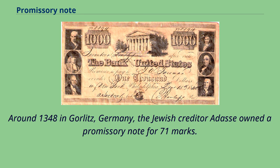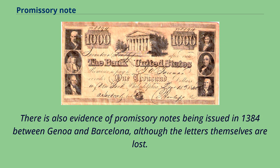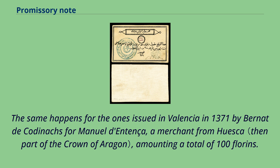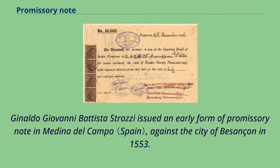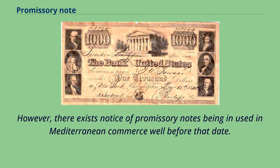Around 1348 in Görlitz, Germany, the Jewish creditor Addis owned a promissory note for 71 marks. There is also evidence of promissory notes being issued in 1384 between Genoa and Barcelona, although the letters themselves are lost. The same applies to ones issued in Valencia in 1371 by Bernat de Cotanox from Arnold Intensa, a merchant from Huesca, amounting to a total of 100 florins. In all these cases, the promissory notes were used as a rudimentary system of paper money, as the amounts issued could not be easily transported in metal coins between the cities involved. Geraldo Giovanni Battista Strozzi issued an early form of promissory note in Medina del Campo against the city of Besançon in 1553; however, there exists notice of promissory notes being in use in Mediterranean commerce well before that date.